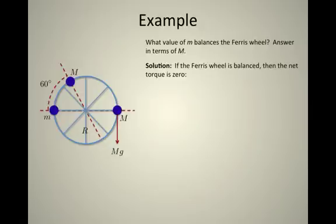If the Ferris wheel is balanced, that means it's not going to move, and that means by Newton's second law when alpha is zero, the angular acceleration is zero. That means also the sum of the torques is zero.